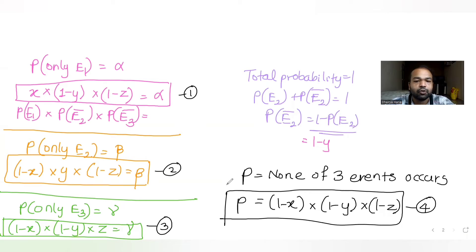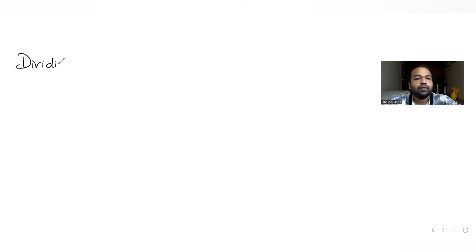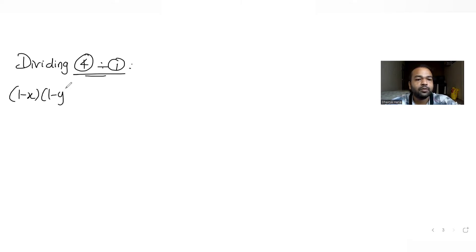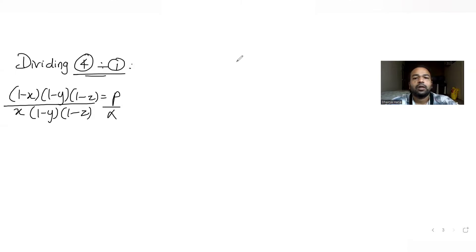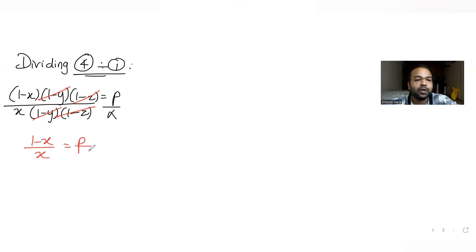If I take the ratio of the p equation divided by the alpha equation, I can directly cancel (1-y) and (1-z) and get the ratio (1-x)/x = p/alpha. So dividing equation for p by equation for alpha gives: (1-x)*(1-y)*(1-z) over x*(1-y)*(1-z), which simplifies to (1-x)/x = p/alpha.